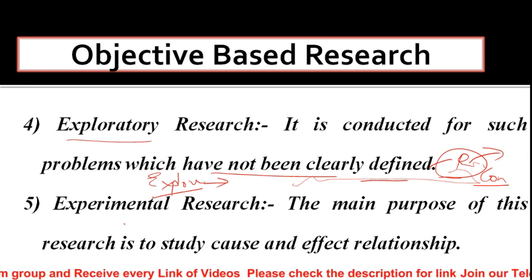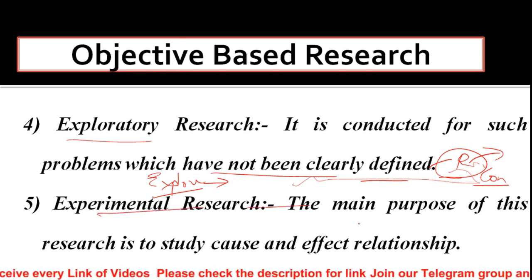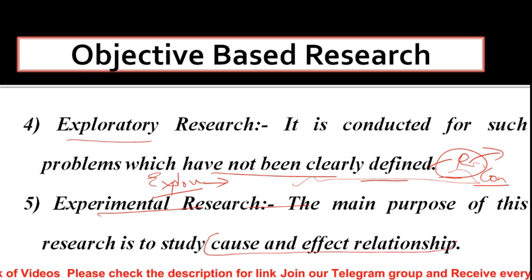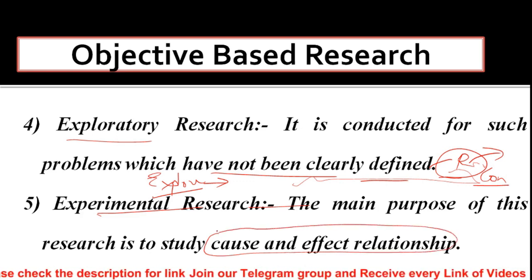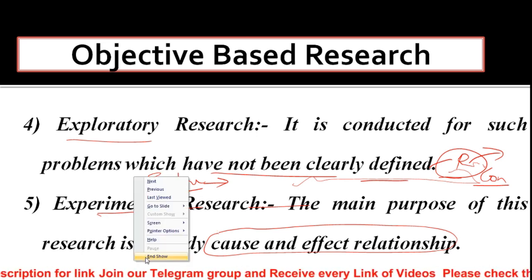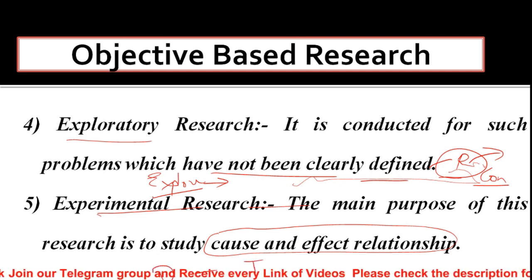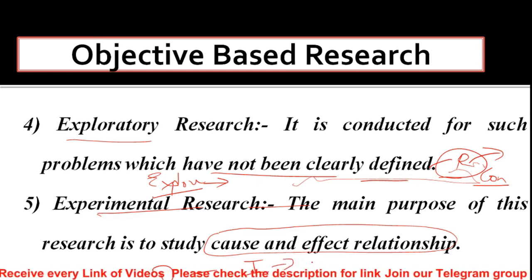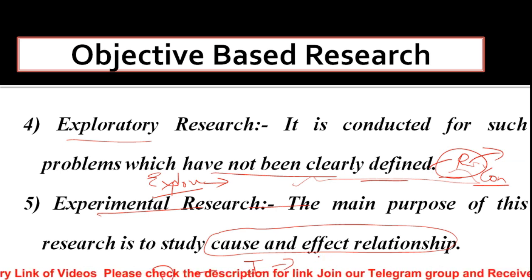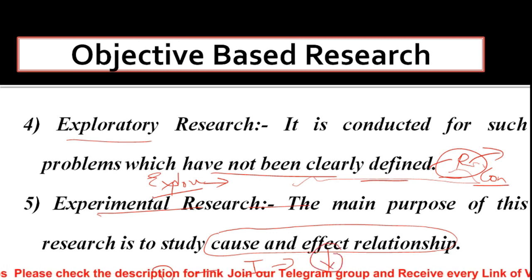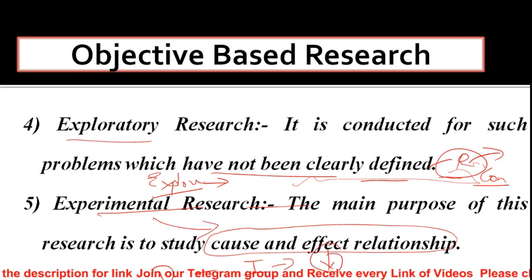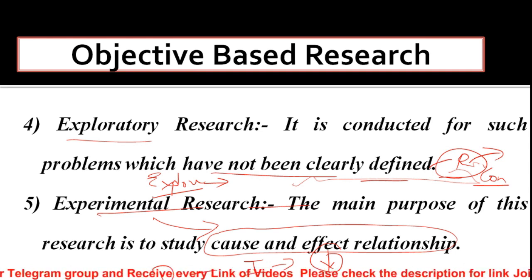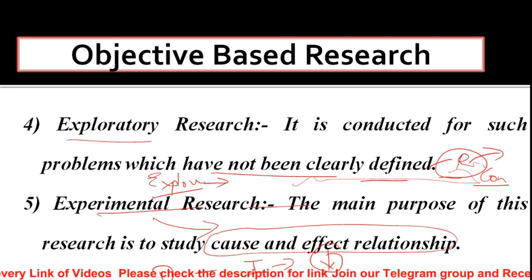Experimental research में हम cause and effect relationship ढूंढते हैं। इसमें दो variables होते हैं: dependent variable और independent variable। हम independent variable को manipulate करते हैं और dependent variable पर उसका effect देखते हैं। The main purpose of experimental research is to study the cause and effect relationship। जहाँ भी cause and effect relationship आएगा, वहाँ experimental research use होगा।